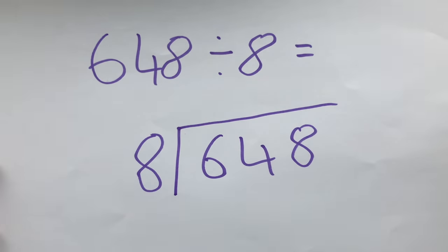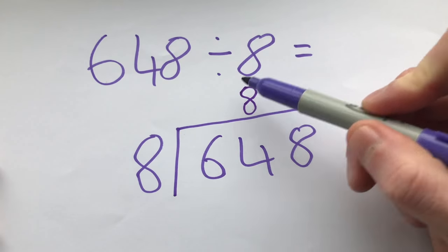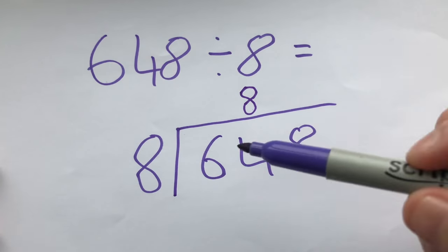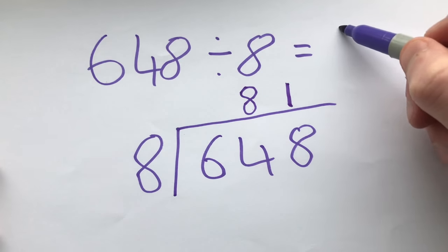How many eights go into 64? And if you know your eight times table, there are eight eights in 64. And finally we go, how many eights are in eight? That's one. So our answer is 81.